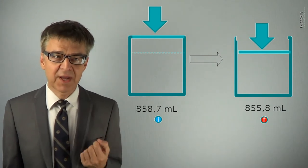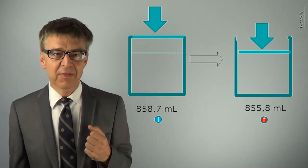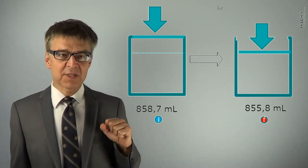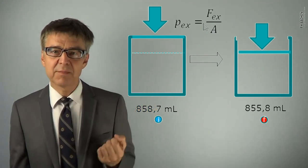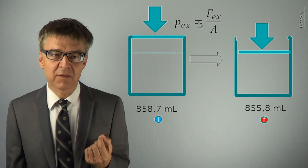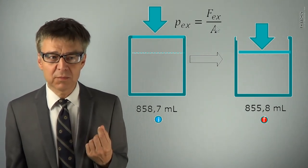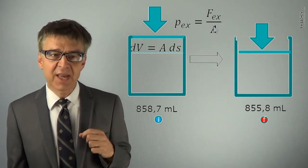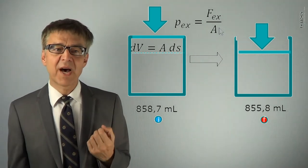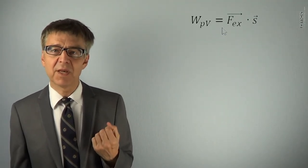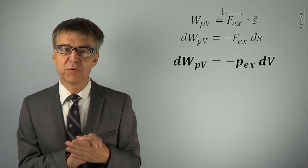We want to calculate this work. A force has to act along a path. The force that results from the external pressure is P external times the area A of the piston. The path results from the change in volume dV over A. So, I get the formula for the PV work to minus P external times dV.